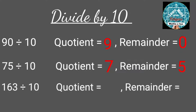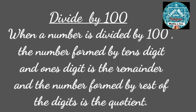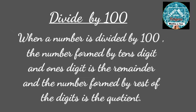When 163 is divided by 10, the remainder is the 1's digit, that is 3, and the quotient is 16. When a number is divided by 100, the number formed by the 10's digit and 1's digit is the remainder and the number formed by the rest of the digits is the quotient.